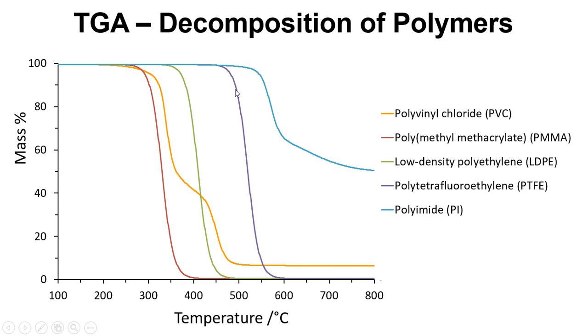We can see that PTFE has a higher thermal decomposition temperature, and we can also see the polyimide has an even higher thermal stability and that it decomposes in this way. There are things we can explore with this.